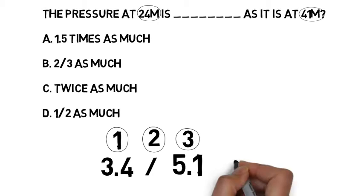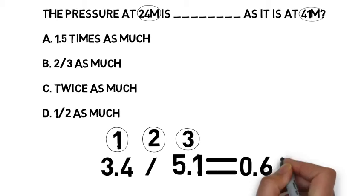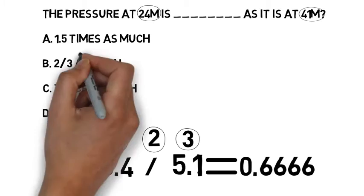3.4 divided by 5.1. What does that give us? Using a calculator, we'll find it 0.666. Another way to say that would be two thirds.